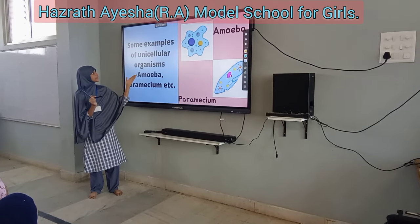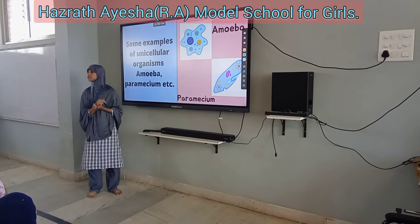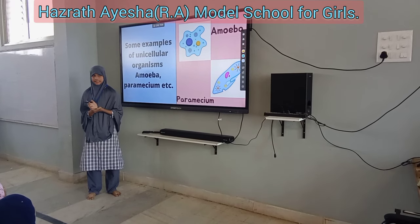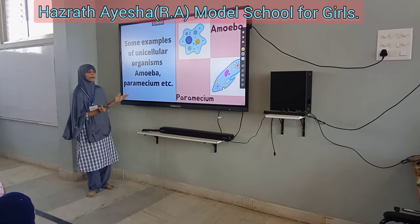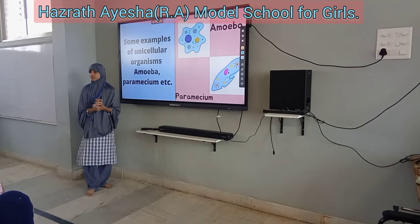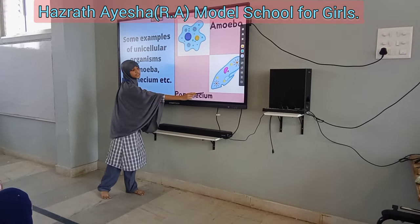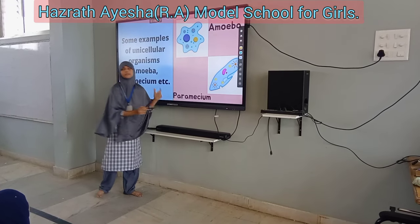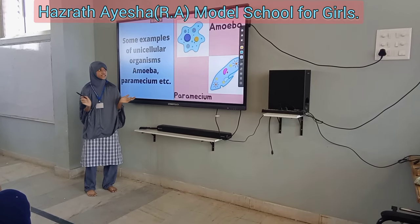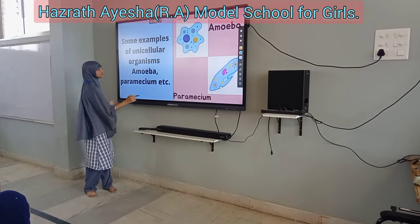Some examples of unicellular organisms are amoeba and paramecia. This is amoeba and this is paramecia. Both of these have only a single cell.